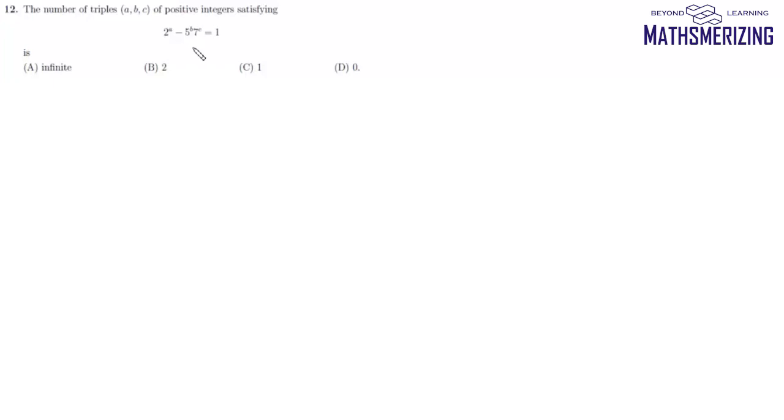Now while solving 2012 paper, I somehow missed this question. Here the question is: number of triplets ABC of positive integers satisfying 2 to the power A minus 5 to the power B into 7 to the power C equals 1.